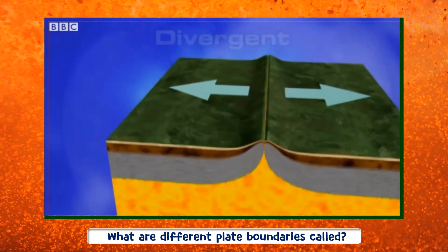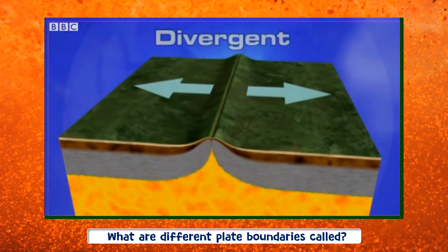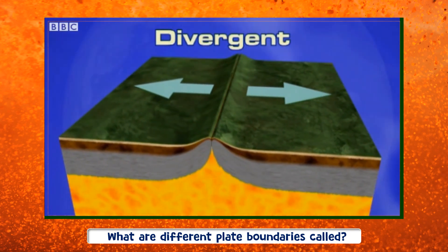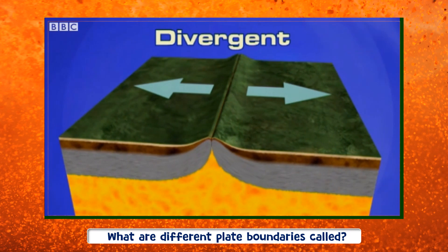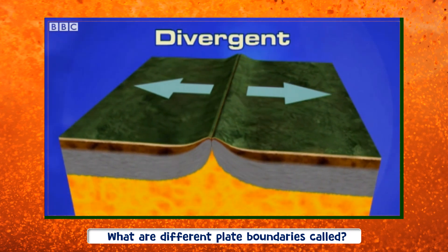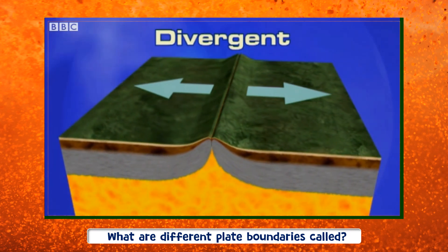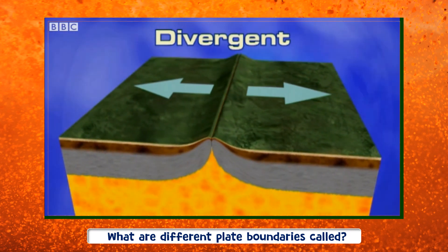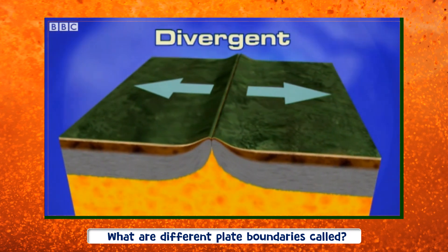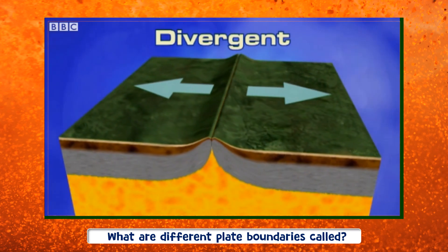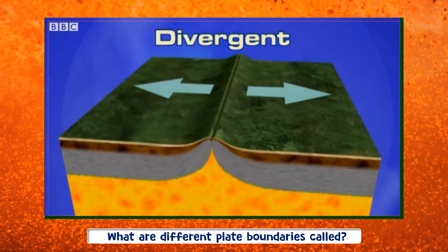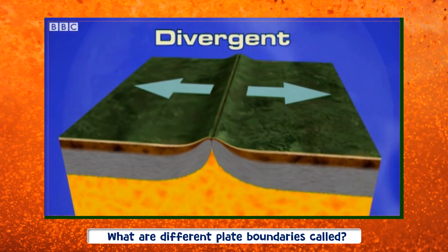The plates can move in one of three different ways. They can move apart or diverge, allowing hot magma to rise up from the mantle below. The expansion places a tremendous strain on the plates, forcing them apart.